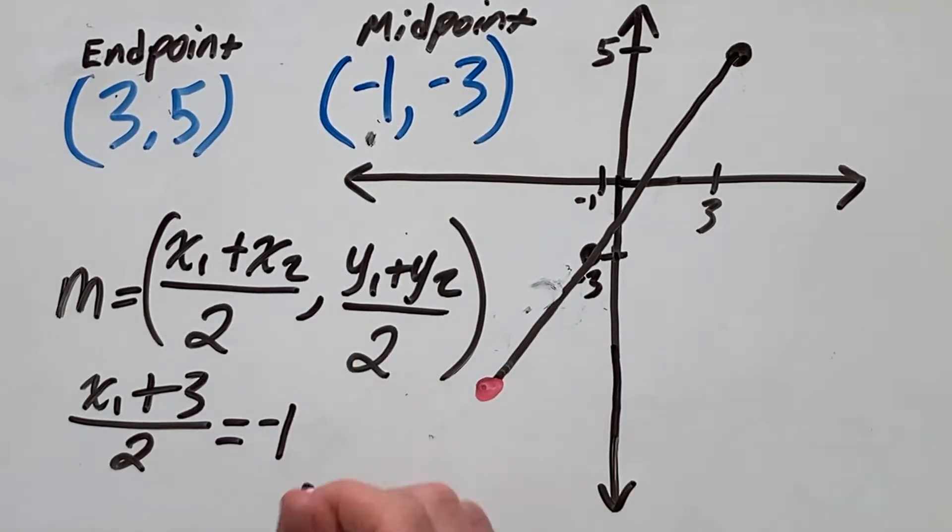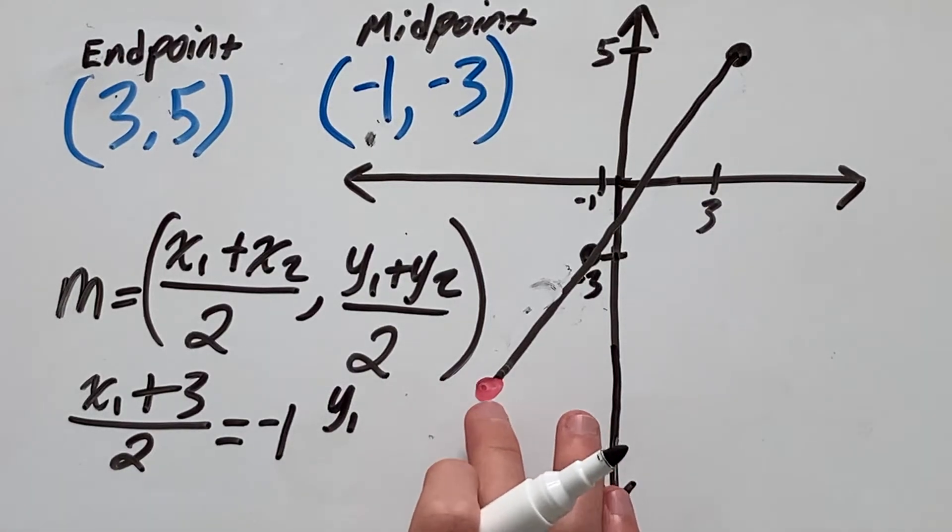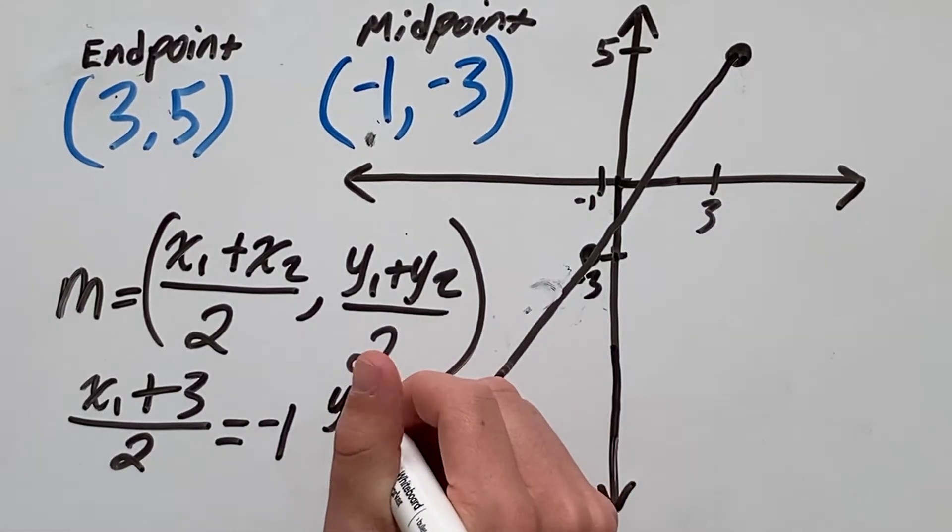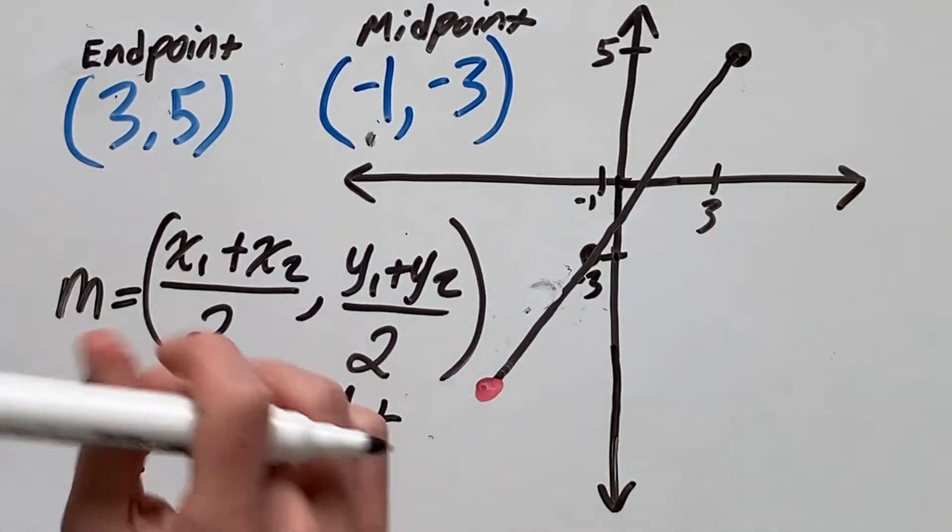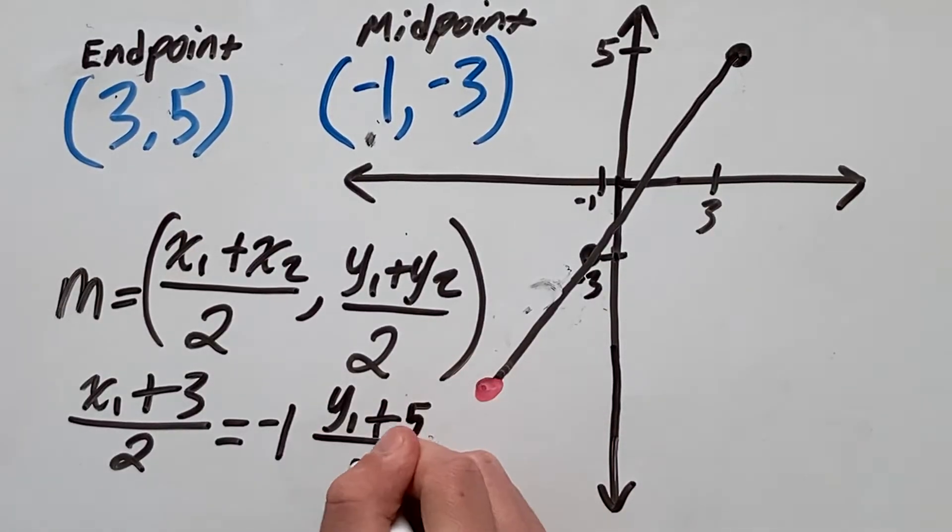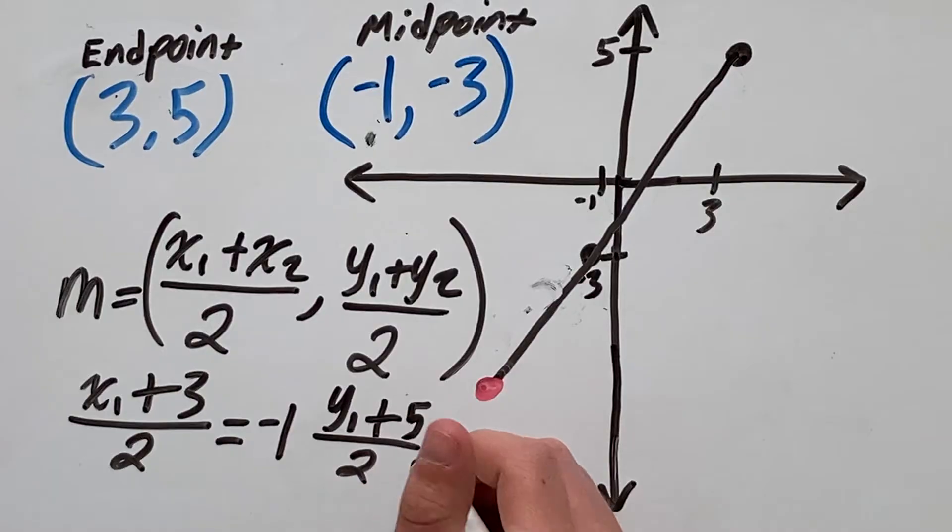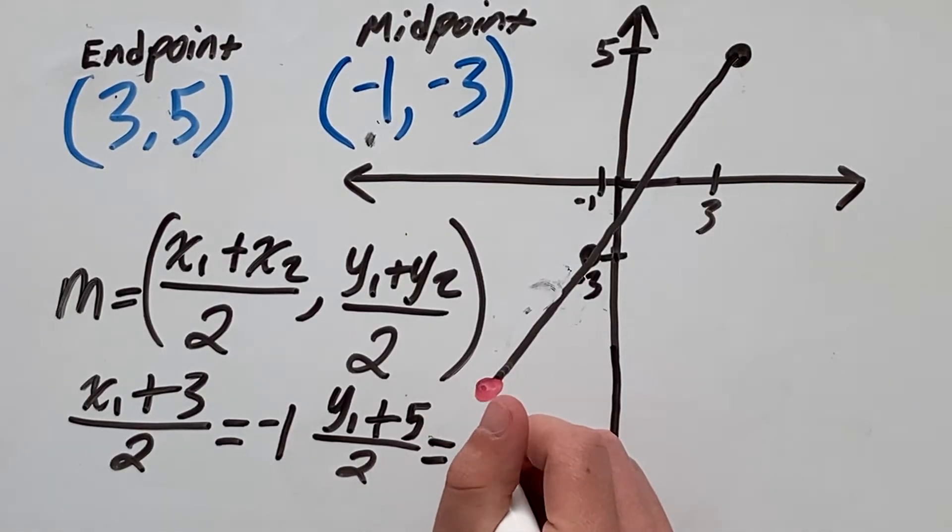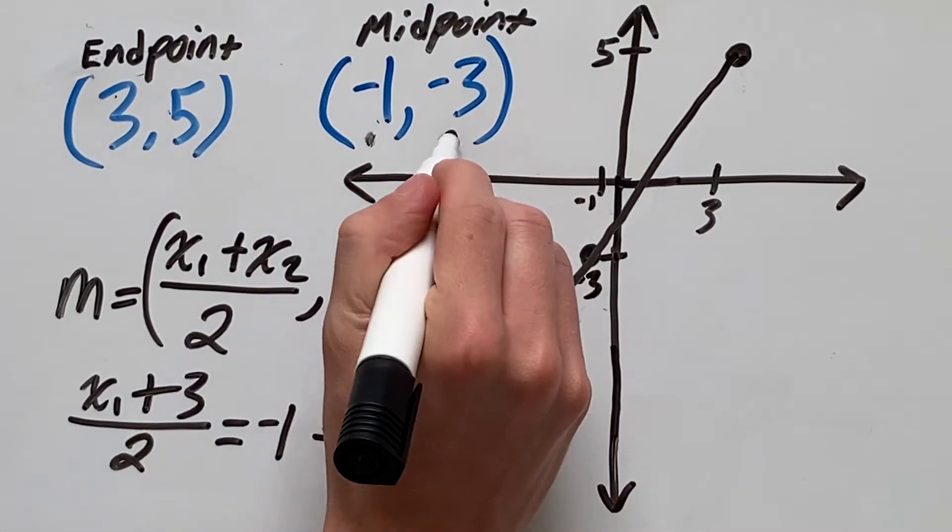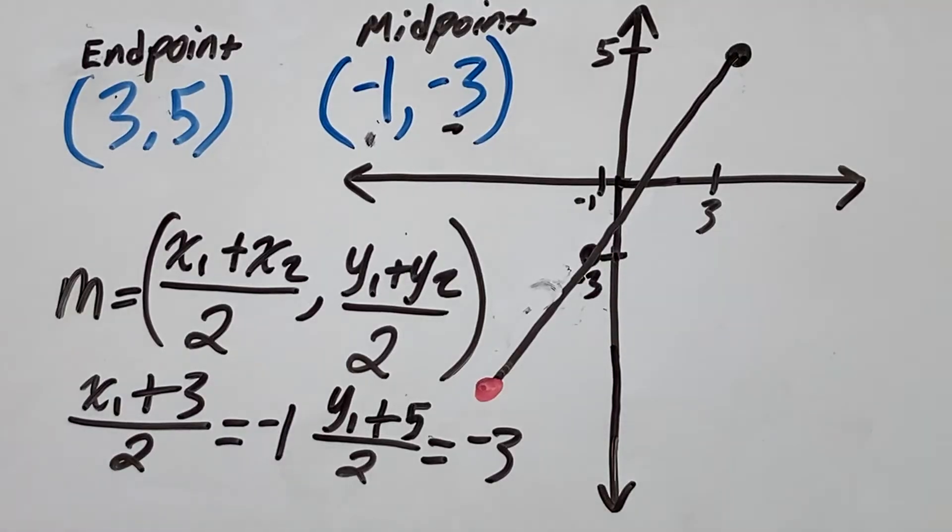And then we can do the same for y. So we have y1, which is unknown since it's our endpoint, plus y2, which is 5 over 2 equals negative 3, which is our y value of our midpoint.